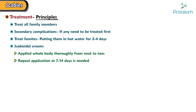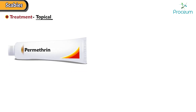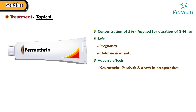Let's go over the options for topical treatment. First, permethrin. At a concentration of 5%, it's applied for a duration of 8 to 14 hours. It's considered safe for use during pregnancy, as well as in children and infants. It is a neurotoxin that causes paralysis and death in ectoparasites. It is most commonly used and associated with irritation.